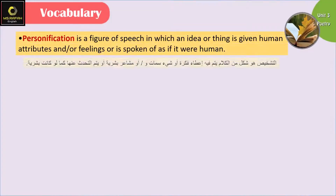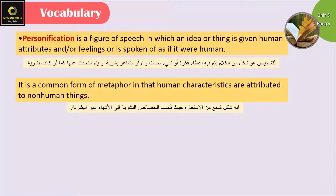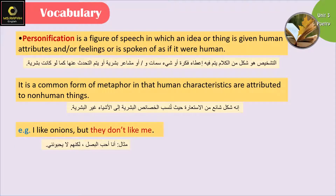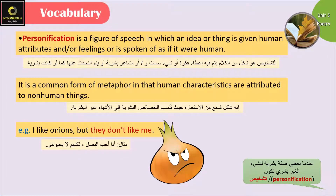The third type is personification. Personification is a figure of speech in which an idea or thing is given human attributes and/or feelings, or is spoken of as if it were human. It is a common form of metaphor in that human characteristics are attributed to non-human things. إذن الpersonification هو لما منعطي صفة بشرية لشيء غير بشري. For example: 'I like onions but they don't like me.' أنا أحب البصل ولكن البصل لا يحبني — عطينا البصل صفة من صفات الإنسان، إذن عنا personification.